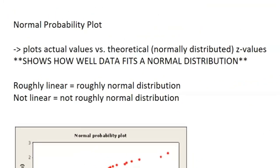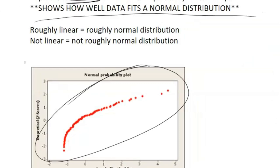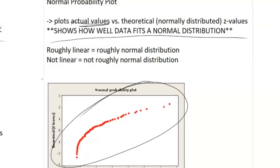The final thing we're going to talk about is super niche, but I'm still going to include it because it's on the CD - that's a normal probability plot. What it does is it plots the actual values versus the theoretical Z values. These theoretical Z values are the Z values you would get if the actual data points were normally distributed. It pretty much shows you how well the data fits a normal distribution. Basically all you need to know is that if it's roughly linear when you plot this, or it might just give you the graph, it's going to be roughly normal distribution. If it's not linear, it's not roughly a normal distribution. That does it for everything you need to know for AP statistics unit one.